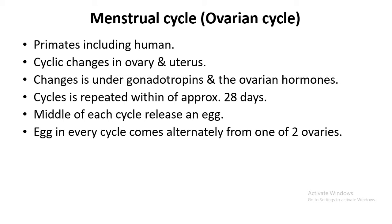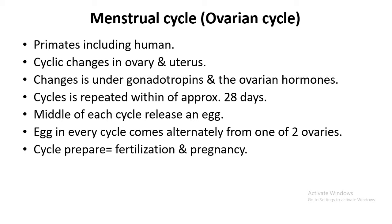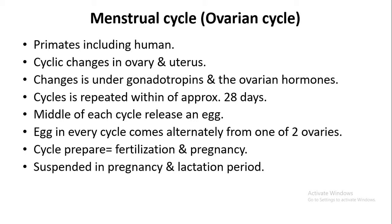In the female reproductive system, there are two ovaries present. Suppose in one month the left ovary releases an egg, then in the next month the right ovary releases the egg. These cyclic changes prepare the female reproductive system for fertilization and pregnancy. The menstrual cycle stops during pregnancy — that is, during the nine months — and also during the lactation period, after childbirth when the feeding process starts.